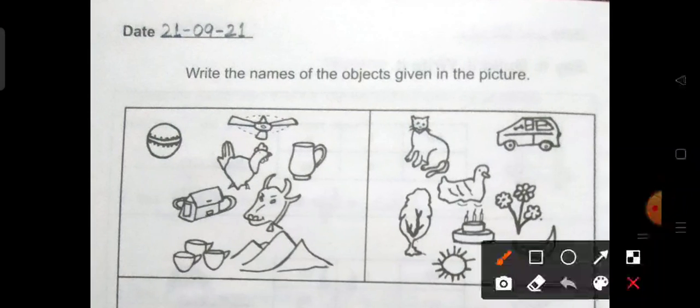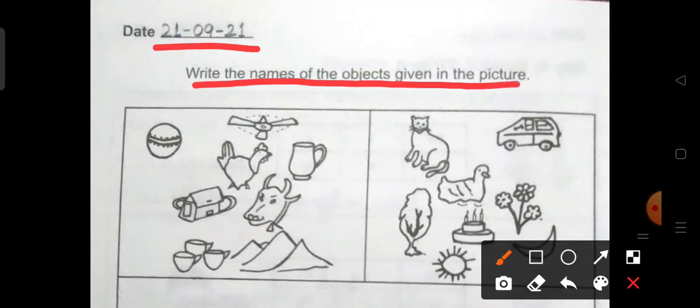Page number 58. Write it again. Write the names of the objects given in the picture. This exercise asks us to write the names of the objects that you see in the picture given below.